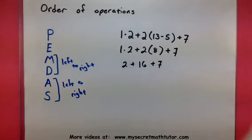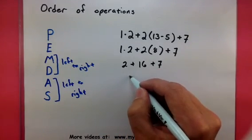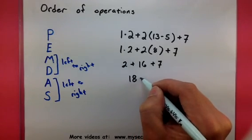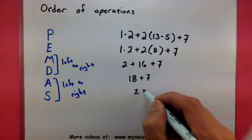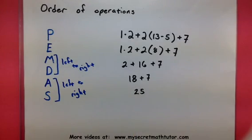Now it looks like we're down to addition. 2 plus 16 is 18. Notice how I took care of that one first since it goes on the left. 18 plus 7 is 25. So this is our final answer.